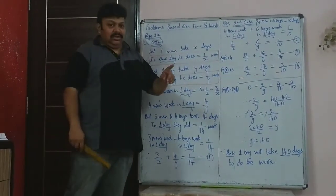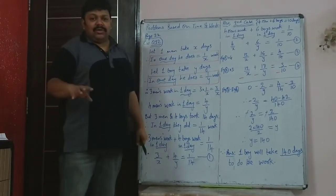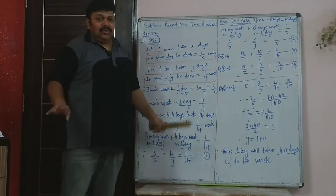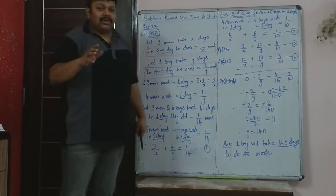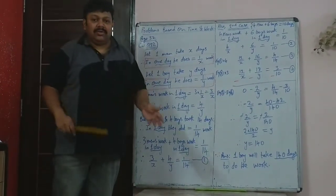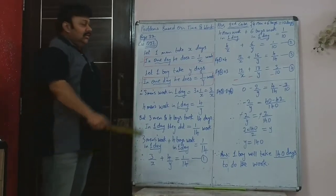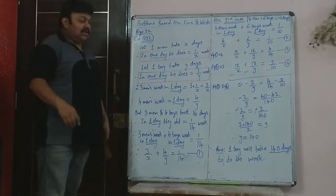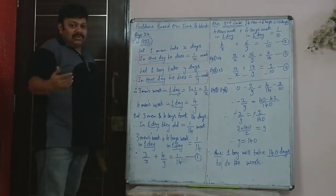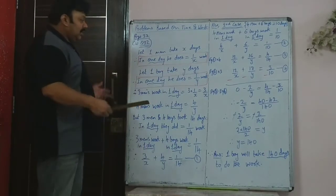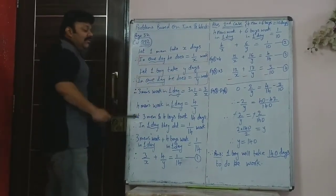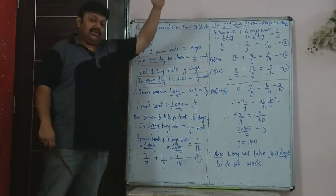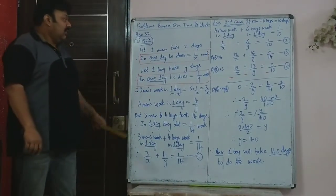Similarly, let one boy take y days. In one day, one boy does 1/y of the total work. We assume everyone works consistently each day, and all men work at the same rate and all boys work at the same rate. Three men's work in one day is 3/x. Four boys' work in one day is 4/y.